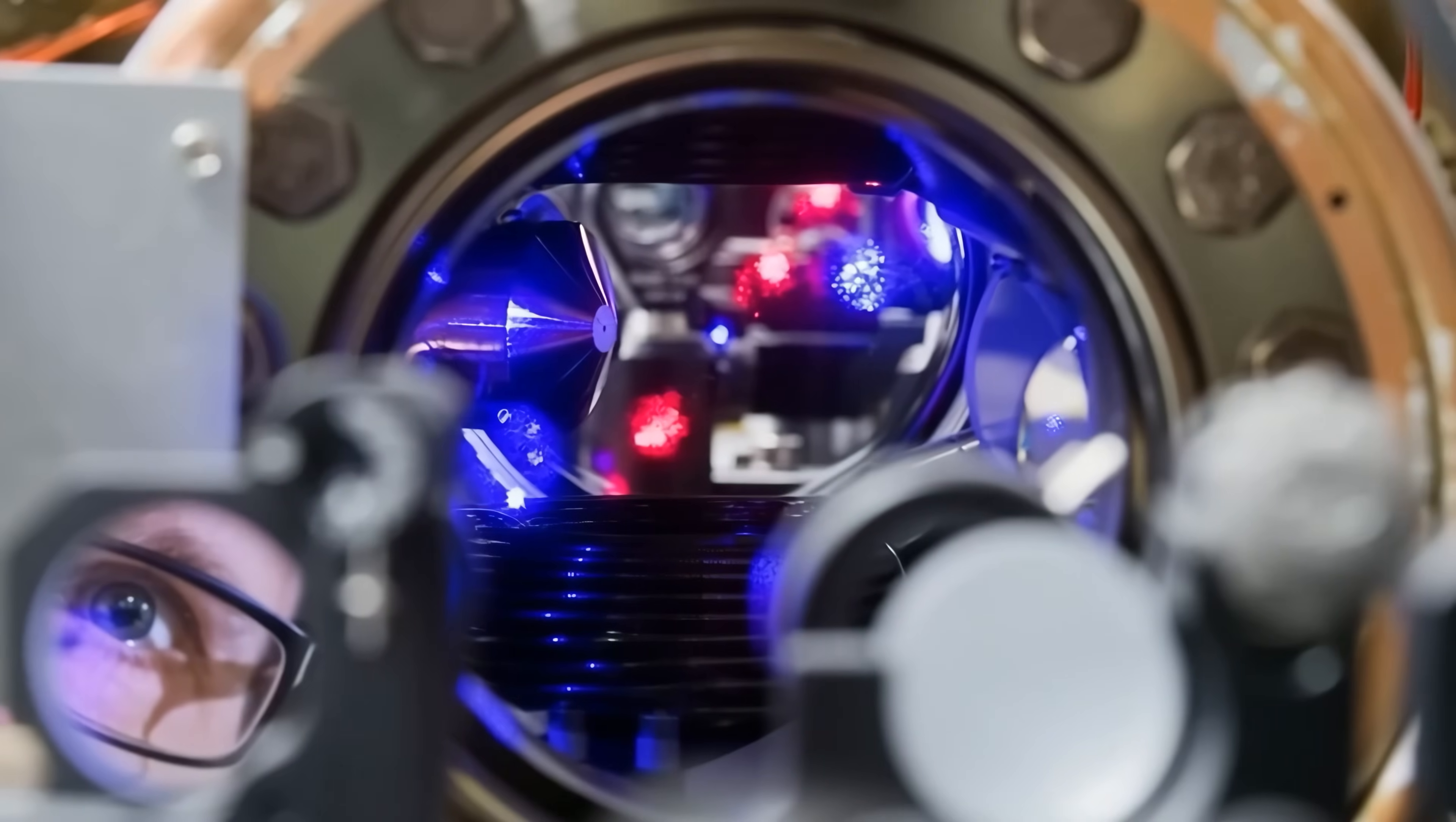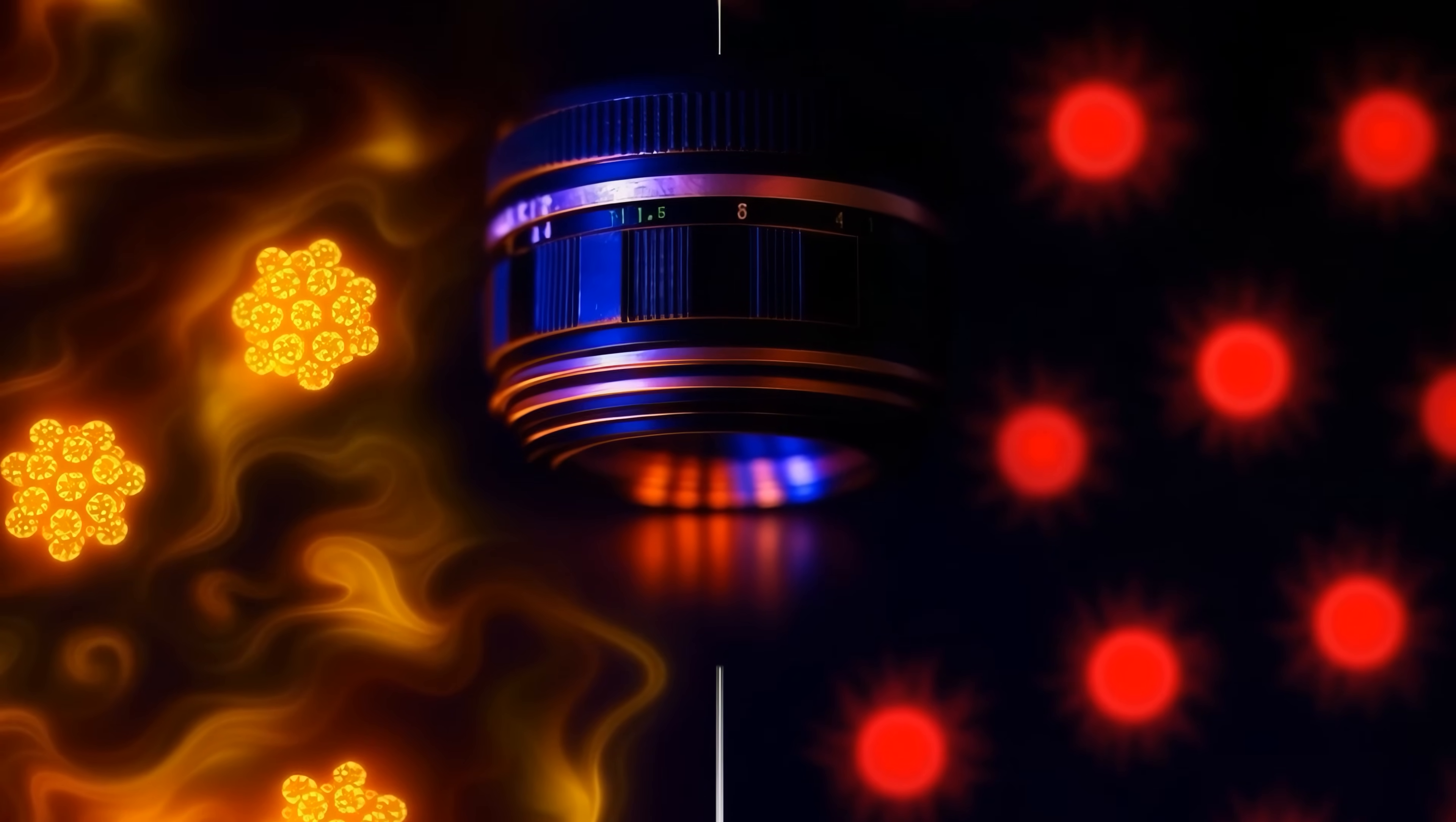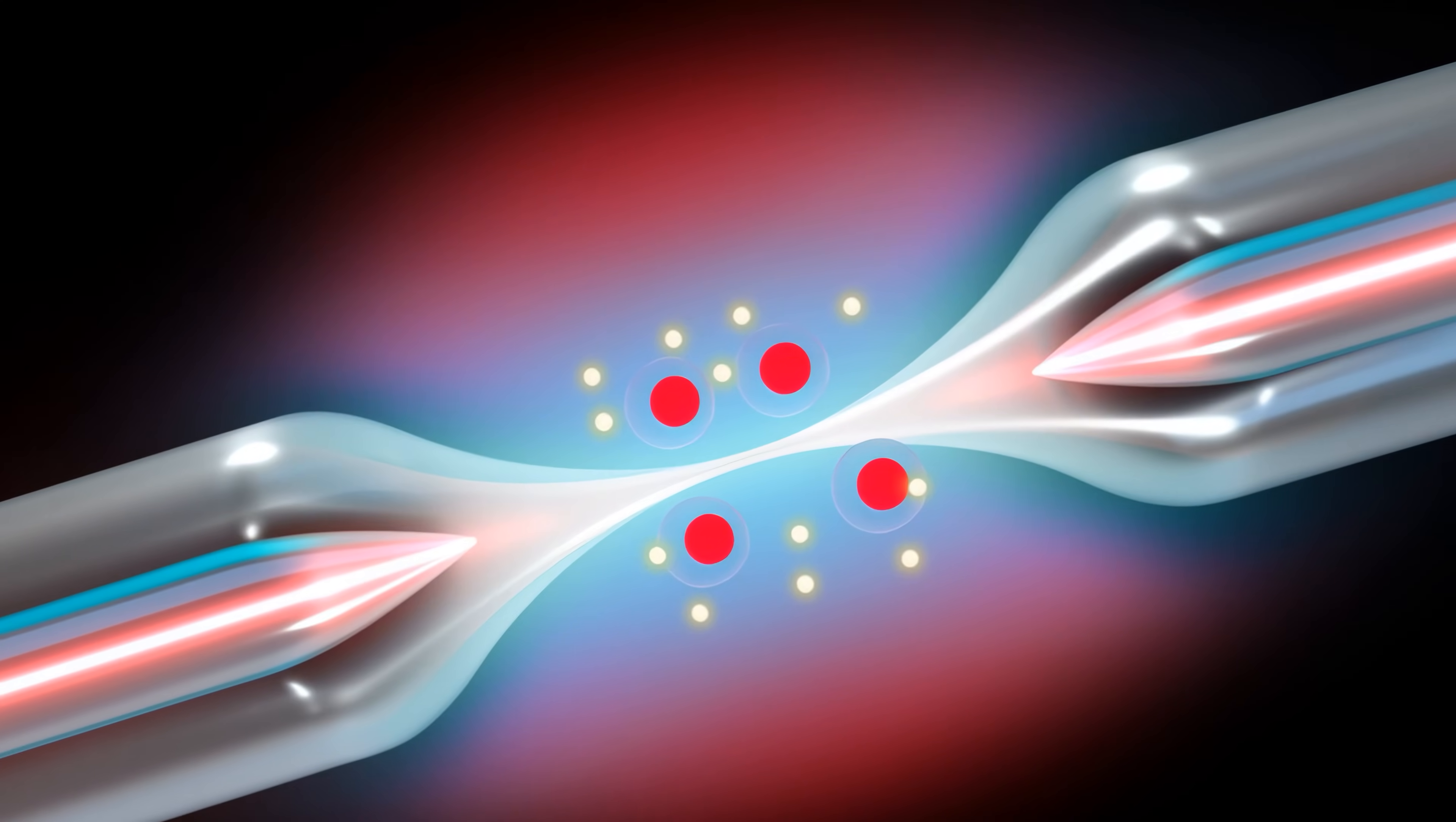The team even fine-tuned the confinement to find a sweet spot, a point where about half of the photons behave like waves and half like particles. At this balance, the contrast of the interference pattern dropped to 50%, exactly matching quantum theory's prediction when the probability of obtaining path information is 50-50. This continuous control highlighted Bohr's long-standing principle. There is a trade-off between knowledge of the photon's path and the visibility of interference, a spectrum governed by the uncertainty principle.